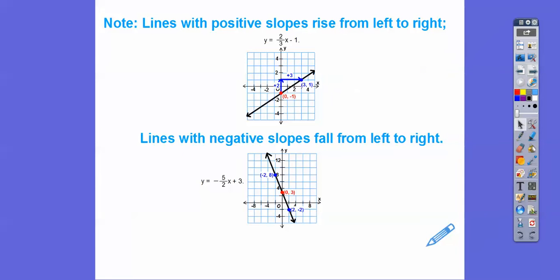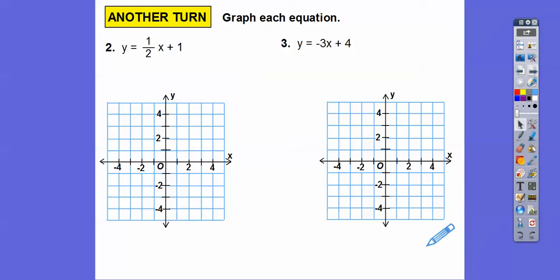Now, notice, you guys, positive slopes always go from the, they rise from the left to the right. They go in this direction. A negative slope always falls. It goes down from left to right in that direction. So they might ask you which one has a positive or negative slope on there.